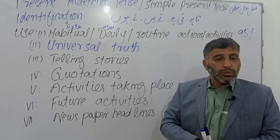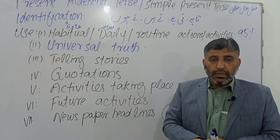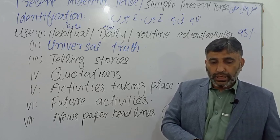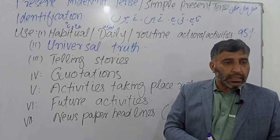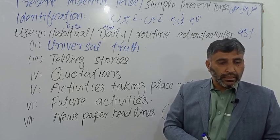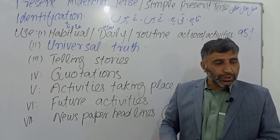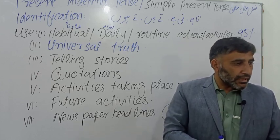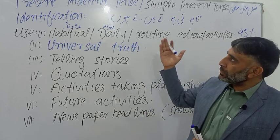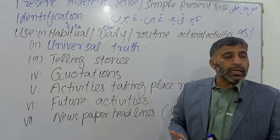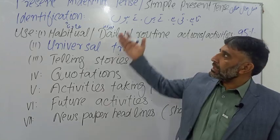For example, 'Bilal recites the Holy Quran' — this doesn't mean he has the Quran in his hand right now, but that he habitually recites it at some time during the day. Similarly, 'Ahmad goes to school' means he habitually goes — not that he is going right now. The difference between present continuous and present independent is that present continuous means the action is happening right now.